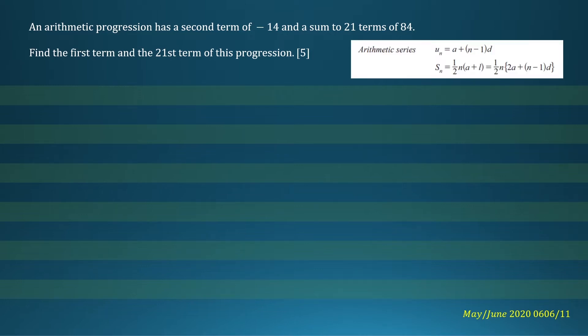Here are the two formulas we need to use. The first formula gives us the nth term of the progression. a is the first term, n is the number of terms, and d is the common difference. The second formula is the sum of the first n terms.